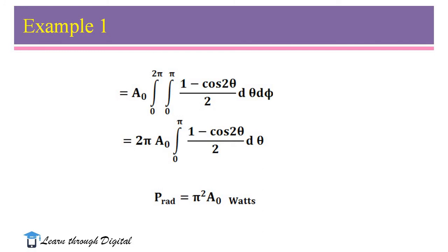Therefore, P_rad equals A₀ times the integral from 0 to 2π and 0 to π of (1 − cosθ) / 2 dθ dφ. After integrating with respect to theta, we get the radiated power P_rad equal to π² A₀ watts. So, from the given radiation intensity, we can calculate the power radiated from an antenna.